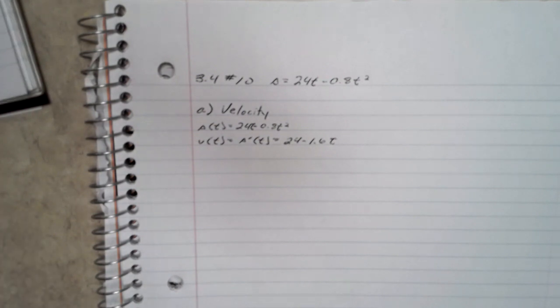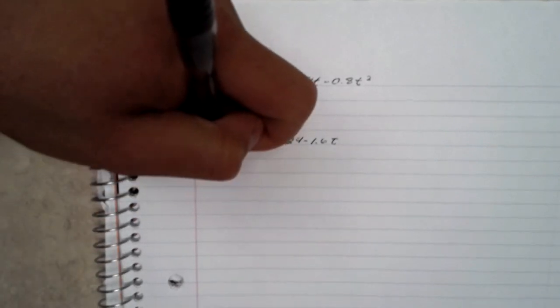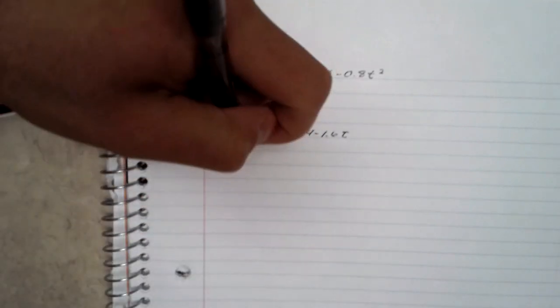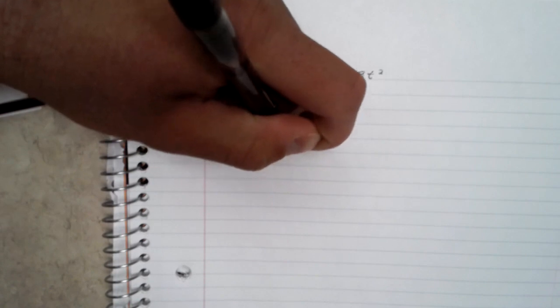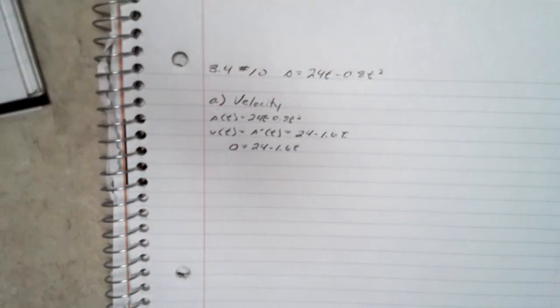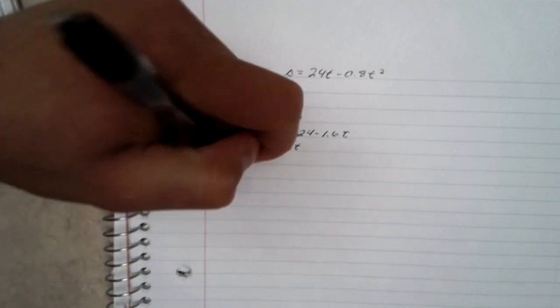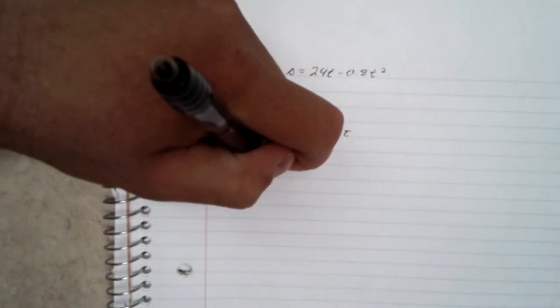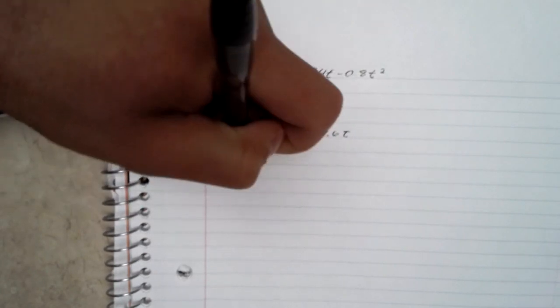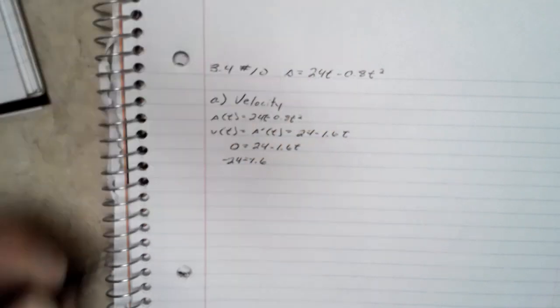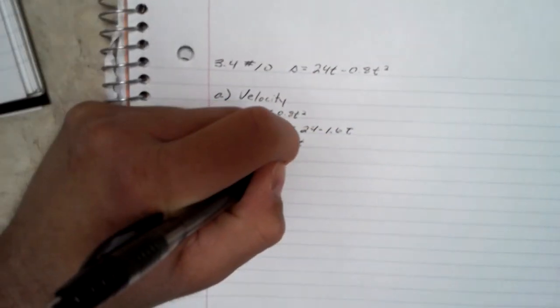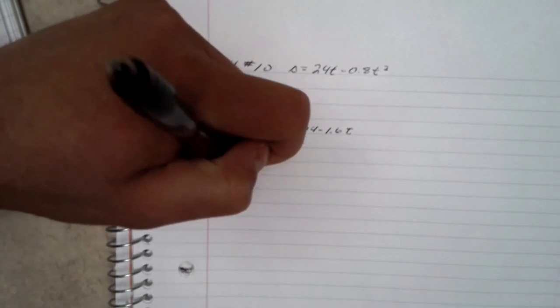And then from there, since we don't know what t is, solve for t by setting our velocity equation to 0. 0 equals 24 minus 1.6t. Subtract 24 from both sides. Negative 24 equals negative 1.6t. T equals 15 seconds.